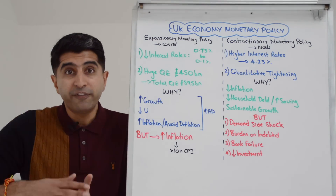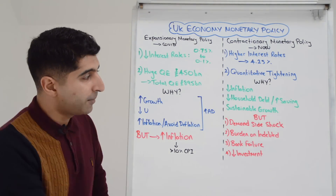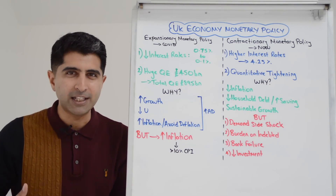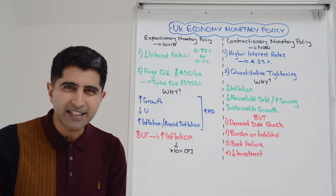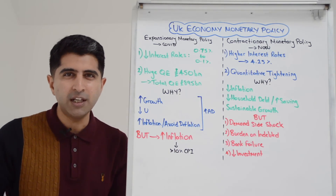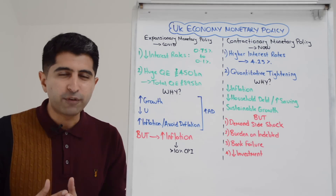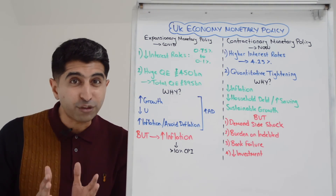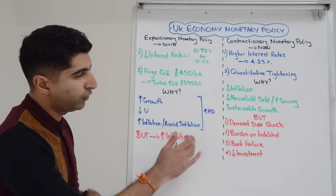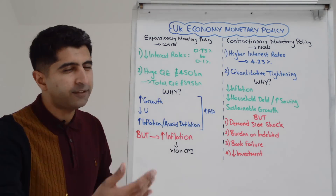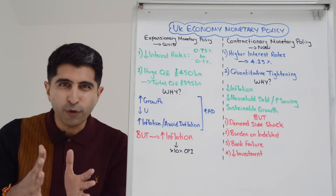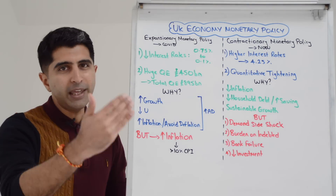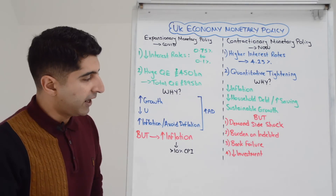Bear in mind, that is 20% of GDP — a huge injection of money into the economy. Both policies were highly expansionary in nature. For the core purposes you've learned in the classroom: simply to increase aggregate demand, to fight against recession. The COVID recession was our worst recession in the UK for over 300 years. The aim was to increase AD and close a massive negative output gap to promote economic recovery.